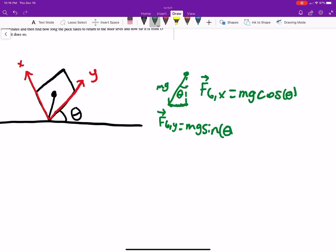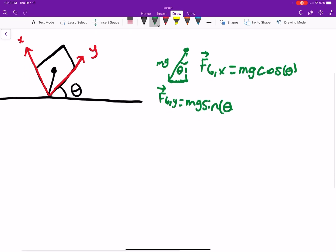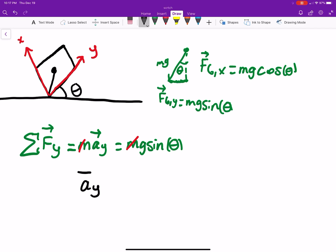Okay, that seems straightforward enough. If we do the sum of all forces in the y direction, that's equal to mass times acceleration in the y direction. And what's our force? Well, we said it was just mg sine theta. If we divide out the m's, we find that the acceleration in the y direction is equal to just g times sine of theta.